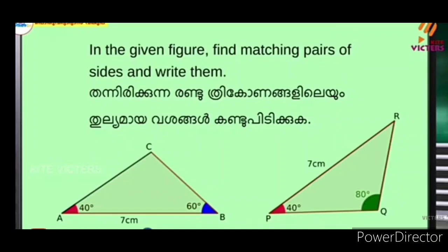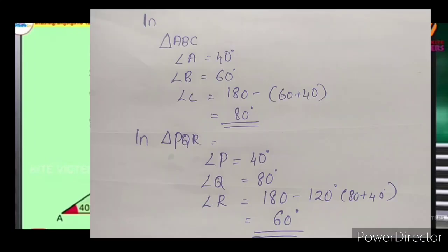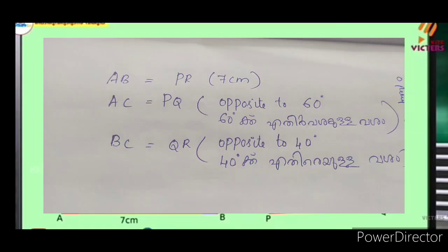Now this rectangle has angle A equal to 40 degrees, B equal to 60 degrees. We can add 80 to 60. The opposite angle is C. The PQR is 80 plus 40 equals 120. You can see the PQR is 80.